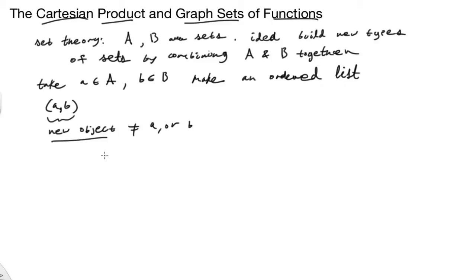Just like a sentence is more than the sum of, it's more than just a bunch of words. It's actually an object that's made by combining words into an ordered list. So that would be an example of this sort of thing.